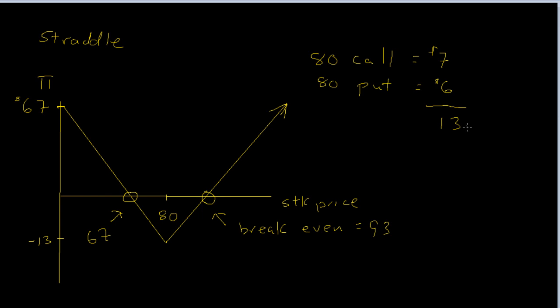So in this case, you buy a put and a call option with the same exercise price. You get this V-shape. It looks like if you actually flipped it over, if you sold a straddle or you wrote a straddle, it would look like you were straddling a bar or something. You have two break-even points, 67 and 93 here. The cost is rather expensive. It's $13, because it costs, in this example, $7 to buy the call and $6 to buy the put.